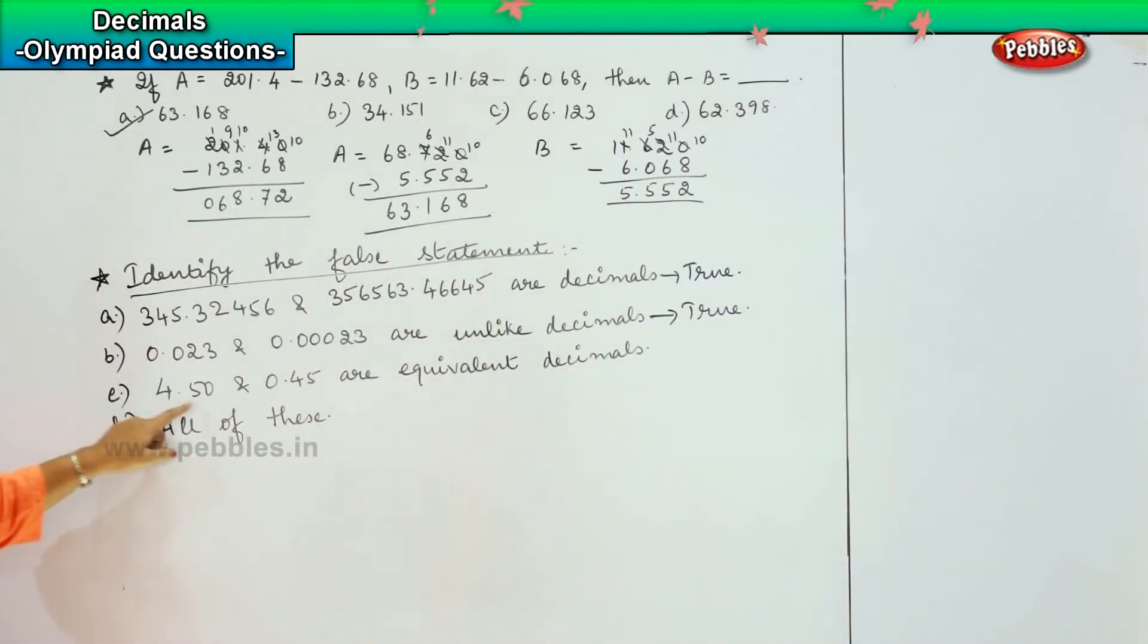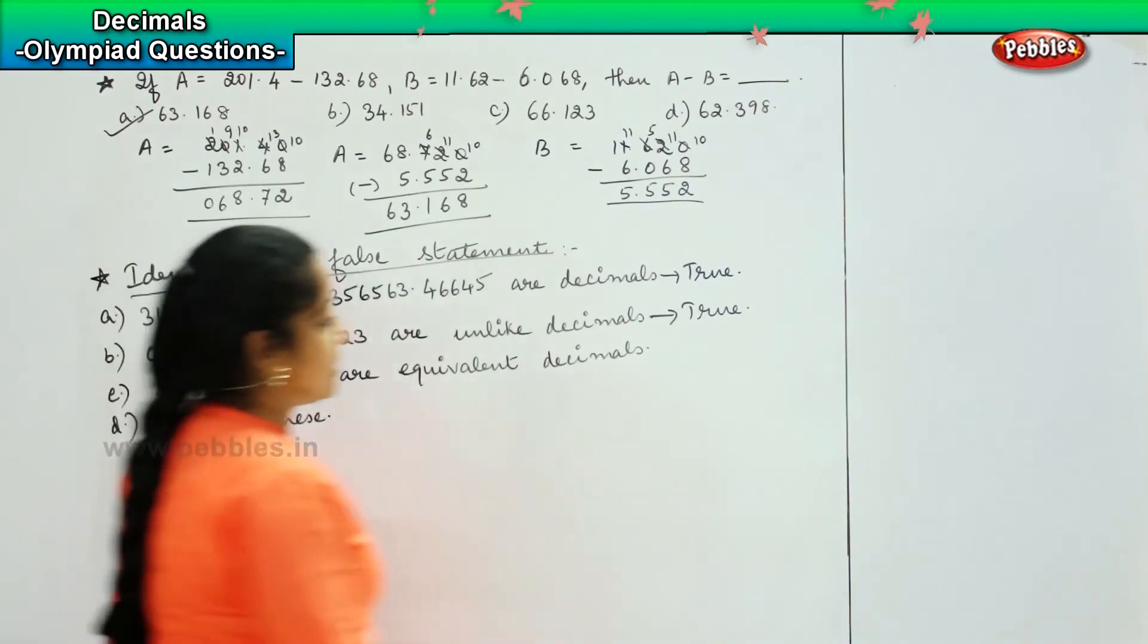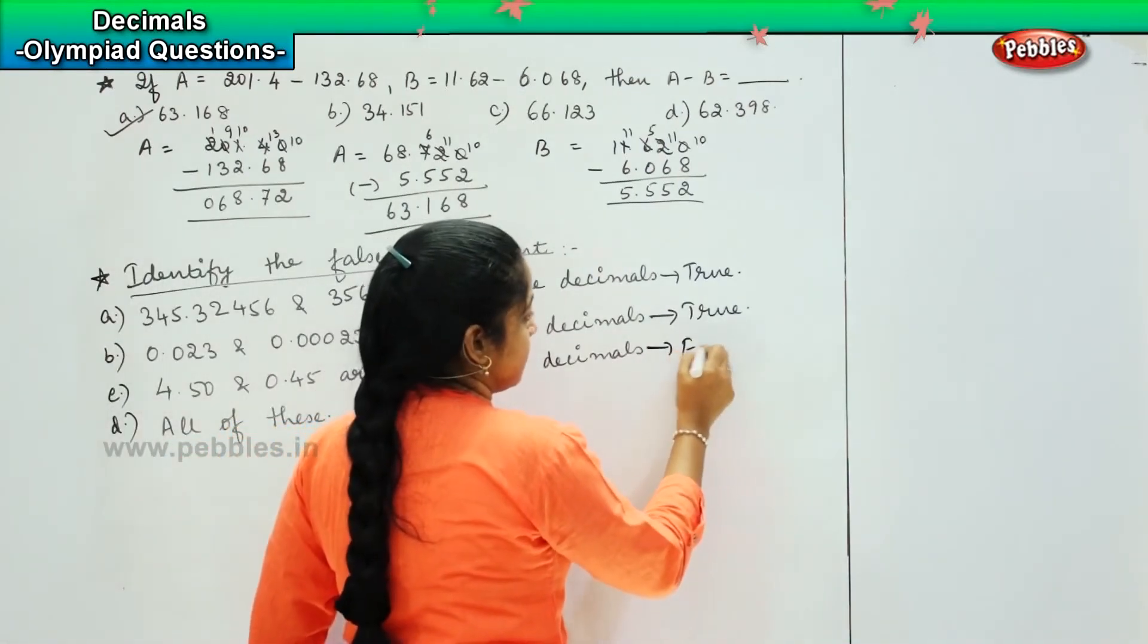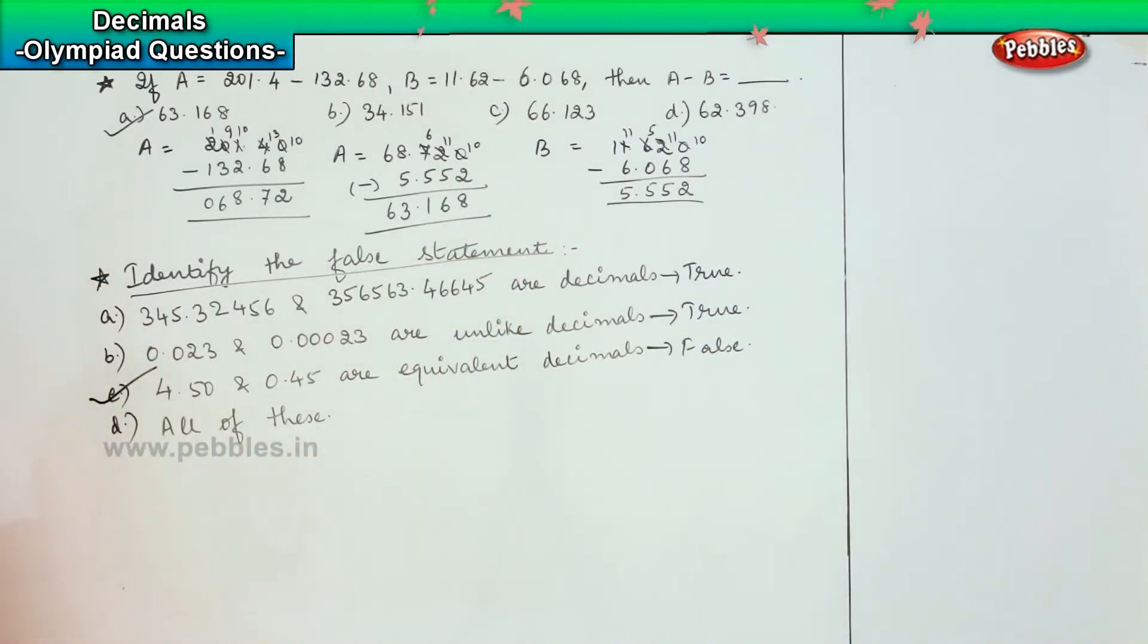The next one, 4.50 and 0.45 are equivalent decimals, which means that both these values are the same. Is it true? No. This is a false statement, right? So which means option C is the correct option for us. Coming to the next question, children.